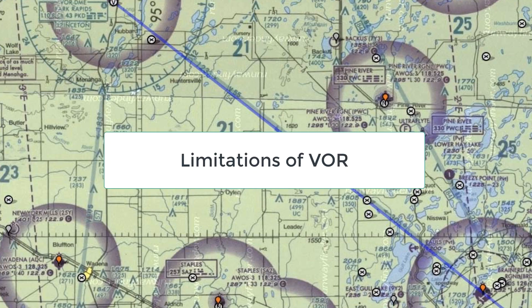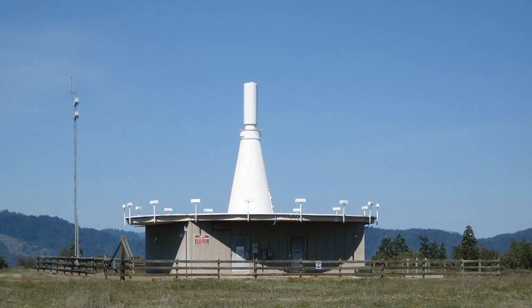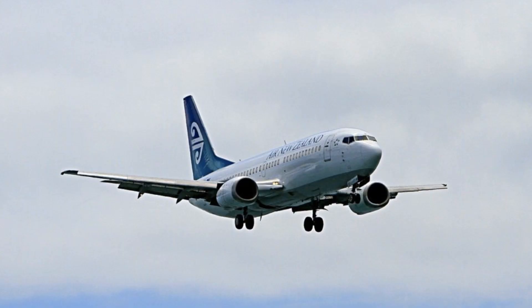While VOR is an accurate and reliable navigation aid, it does have limitations. VOR is subject to line-of-sight limitations, which means that the aircraft must be within range of the ground-based station to receive the VOR signal. Additionally, VOR is susceptible to interference from other radio signals and can be affected by terrain and weather conditions. Finally, VOR is a relatively old technology and is being phased out in favor of more advanced navigation systems, such as GPS.